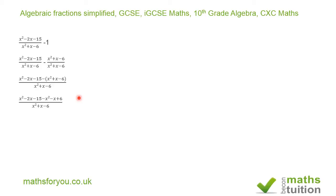So now I open up the brackets and end up with x squared minus 2x minus 15, minus x squared plus x minus 6. The x squareds cancel out, so I'm now left with minus 2x minus x, which gives minus 3x, and minus 15 plus 6 gives minus 9. So I now have minus 3x minus 9 divided by x squared plus x minus 6.